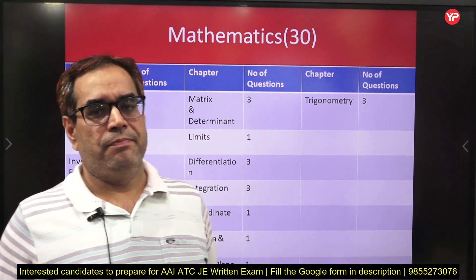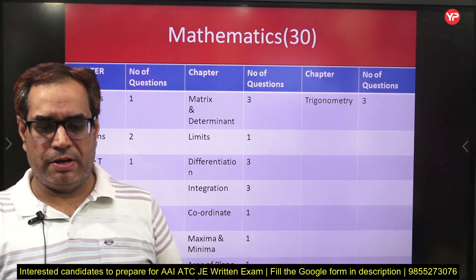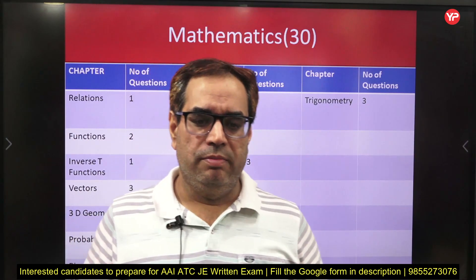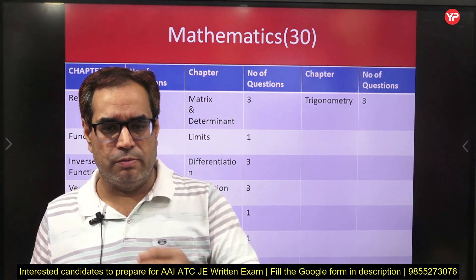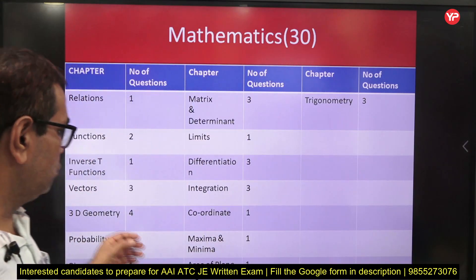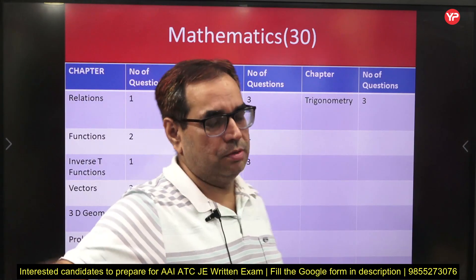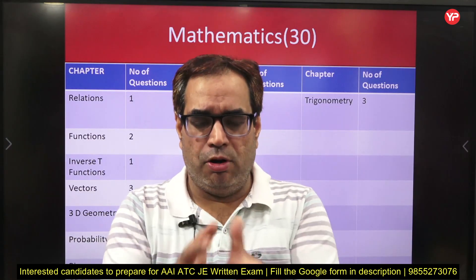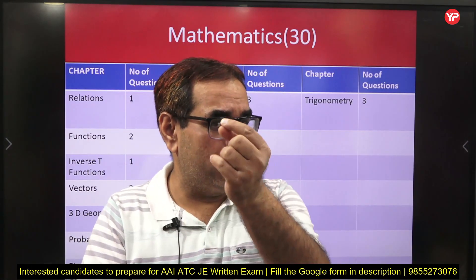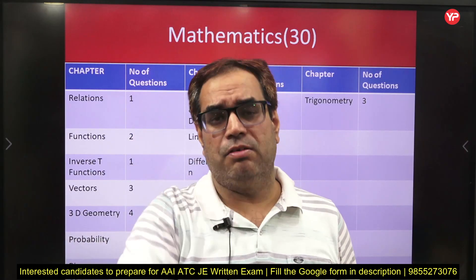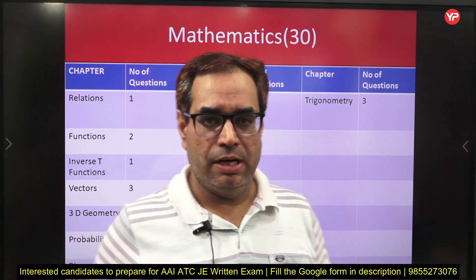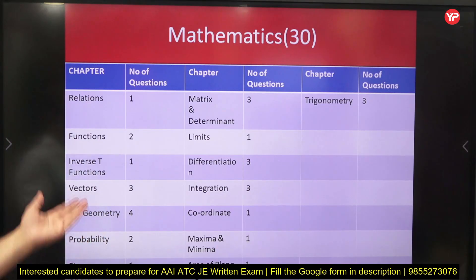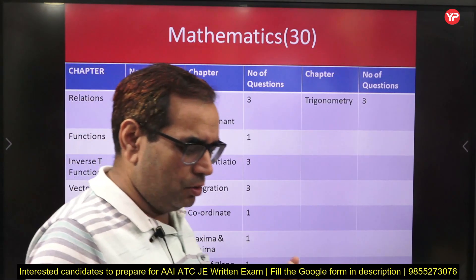Inverse Trigonometric Functions, which comes in 12th standard, always has one question in every paper from the last three to four years — mainly based on principal values. You cannot leave even one question; you should try to get all 60 correct because the competition is neck-to-neck and one mark is very important. Inverse Trigonometric Functions is covered in both live and recorded classes.